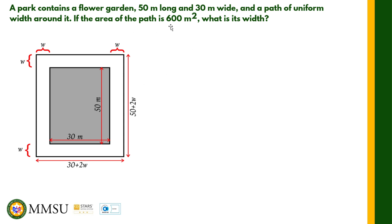The total width including the pathway is 30 plus 2w. We are solving for the width of the path, and the given area of the path is 600 square meters. To find an equation for the area of the path, remember your plane areas: the area of the path is equal to the total area of the rectangle minus the area of the garden.